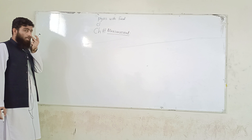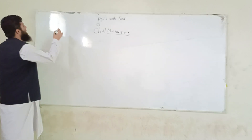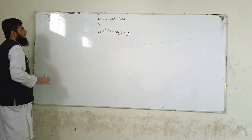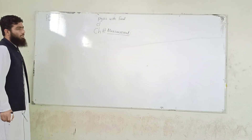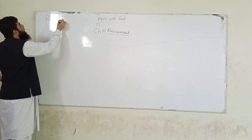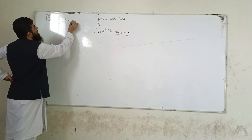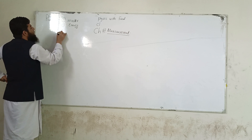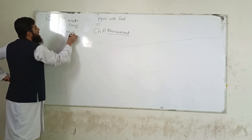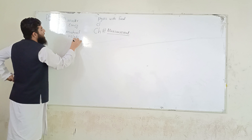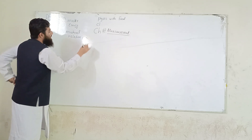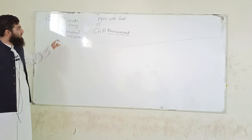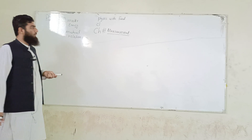لیکن اس کو شروع کرنے سے پہلے ہم physics کی introduction کی طرف چلتے ہیں۔ کوئی بھی book اٹھا لو physics کا چاہے وہ basic level کا ہو یا advanced level کا، اس میں لکھا ہوگا کہ physics میں ہم تین چیزیں پڑھتے ہیں: Matter, Energy, اور their mutual relationship.